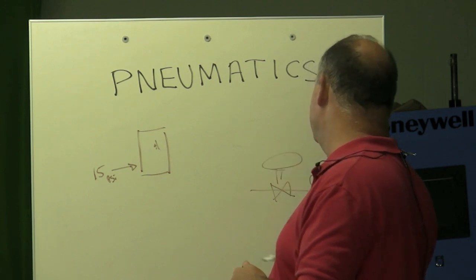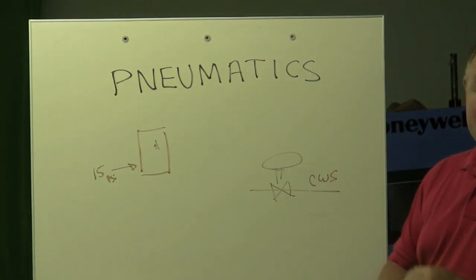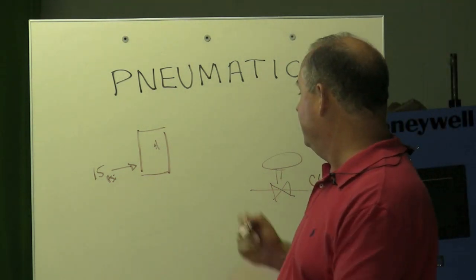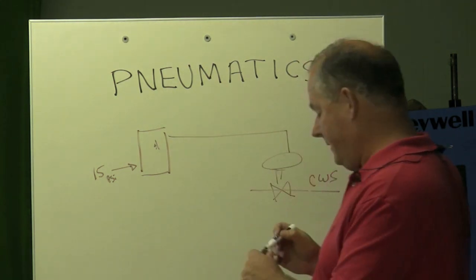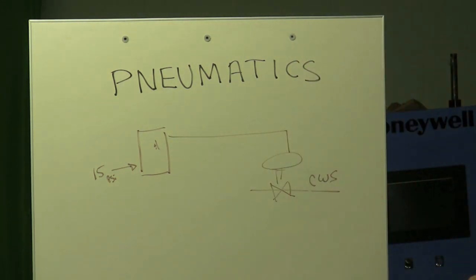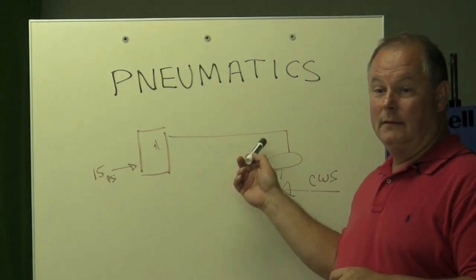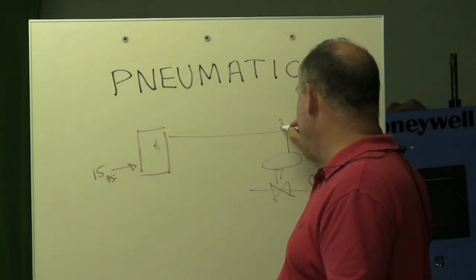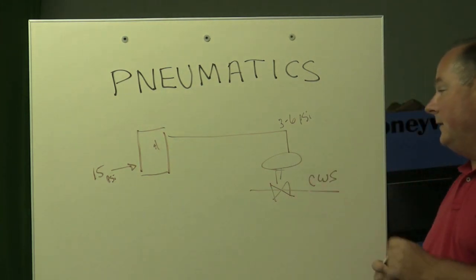We're going to have some kind of actuator over here with some kind of spring range. We'll choose the spring range based on whether it's normally open or normally closed. We don't really care what it is for this application. There's our thermostat and here's our branch line that comes over. Now, we have powered the thermostat and gotten some analog signal, which in this case may be a 3 to 6 PSI branch line over to the valve,